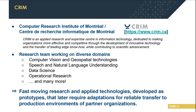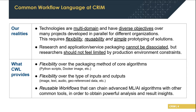This results in CRIM being a company that must rapidly adapt to fast-moving research by producing prototypes of applied technologies, but that must also be transferable to production environments of partner organizations. The context requires us to employ technologies that match our realities. Multi-domain technologies and diverse objectives between prototypes must provide flexibility, reusability, and simple solutions. Solutions must not limit exploration of new research possibilities.